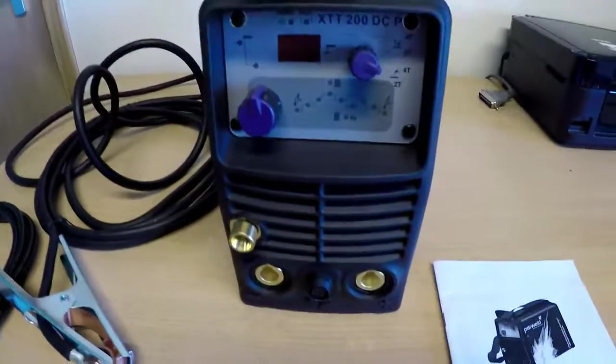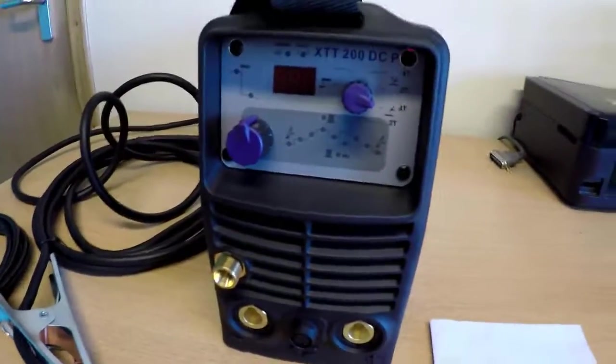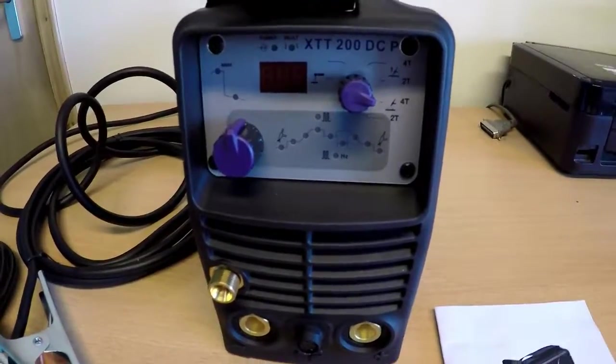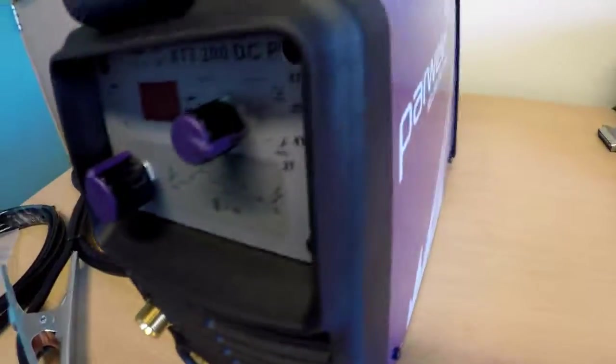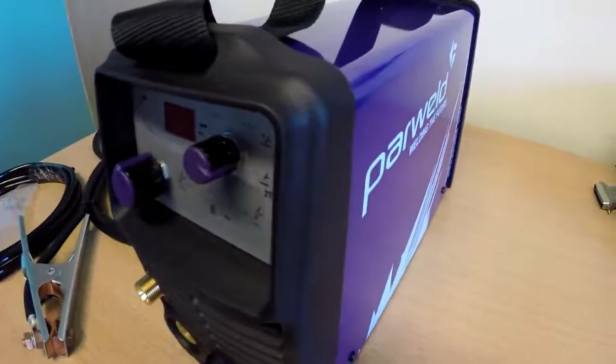And that is the Parweld XTT 200 DC, it's available on our website at www.arc-right.co.uk or you're more than welcome to ring us on 01524 855 213.